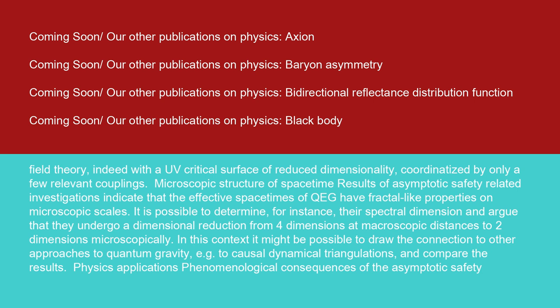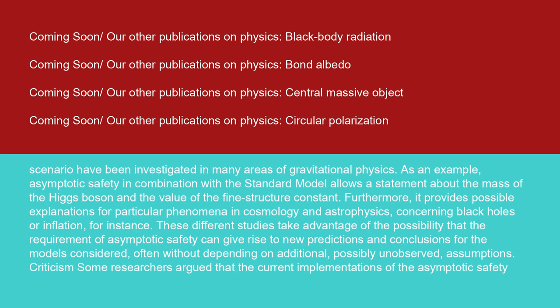Physics applications: phenomenological consequences of the asymptotic safety scenario have been investigated in many areas of gravitational physics. As an example, asymptotic safety in combination with the standard model allows a statement about the mass of the Higgs boson and the value of the fine structure constant. Furthermore, it provides possible explanations for particular phenomena in cosmology and astrophysics, concerning black holes or inflation, for instance. These different studies take advantage of the possibility that the requirement of asymptotic safety can give rise to new predictions and conclusions for the models considered, often without depending on additional, possibly unobserved assumptions.